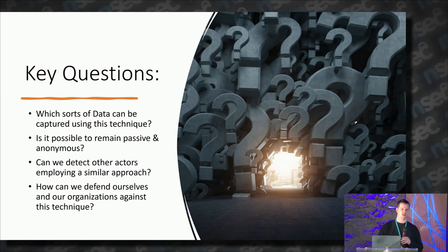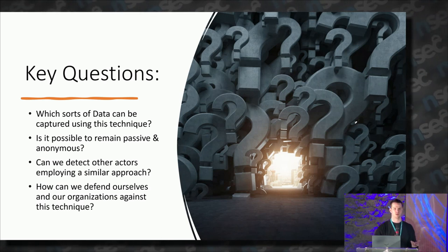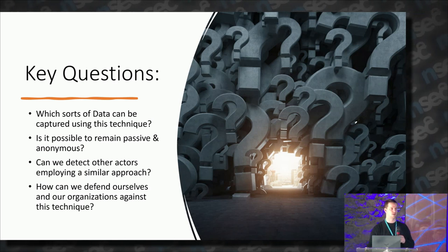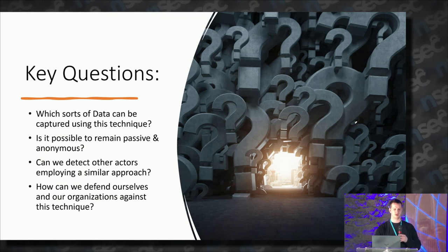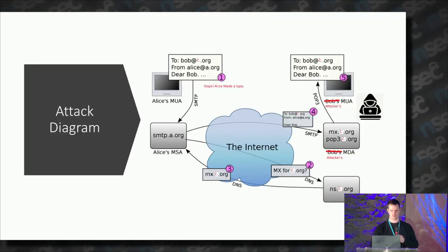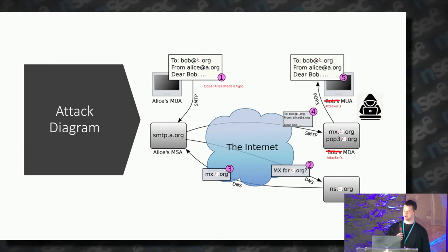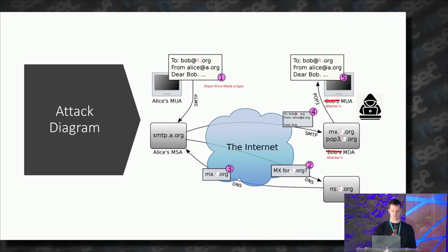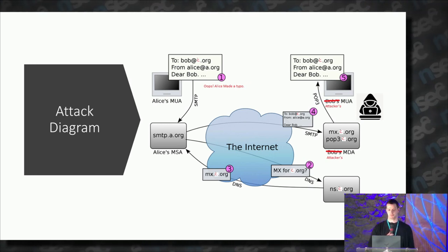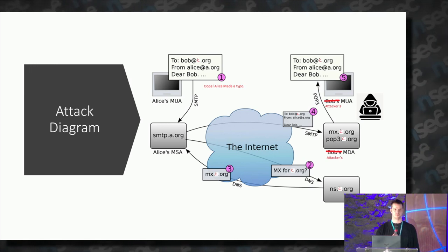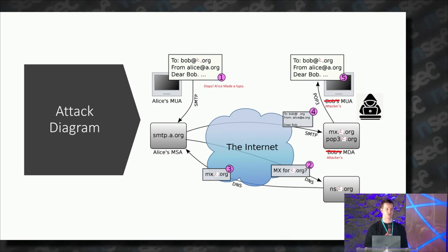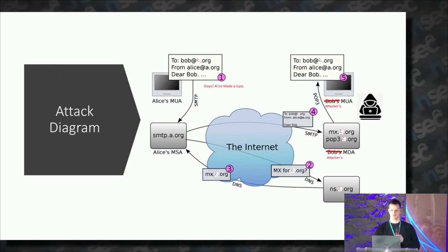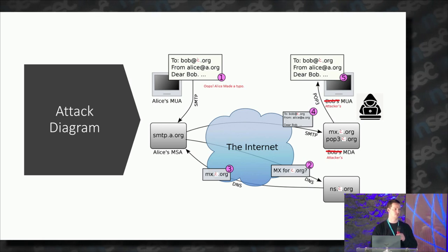The key questions I had: what kind of data can we capture this way? Is it possible to remain passive and anonymous? Can we detect other actors employing similar techniques? And how can we defend ourselves against such an attack? So remember the email diagram — Alice means to send an email to bob@b.org but mistypes and sends it to bob@c.org. The email server has no problem with that — it accepts it, sends it for an NS lookup, there's an MX record at c.org, and the email gets delivered right into the attacker's inbox.